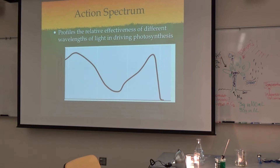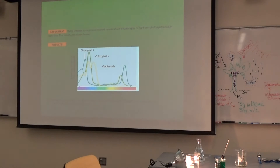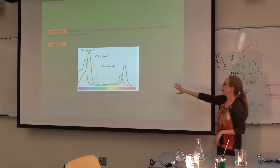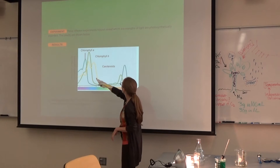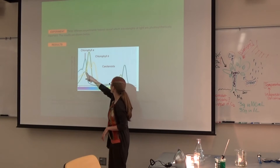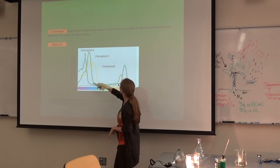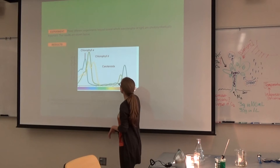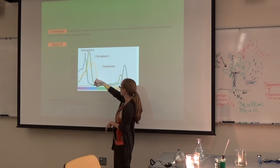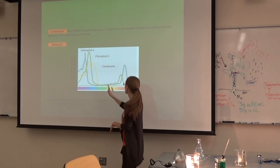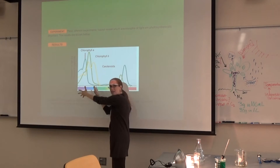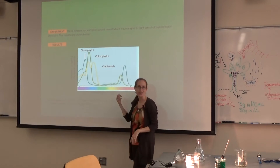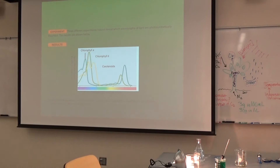Looking at the actual absorption spectrum — here's chlorophyll A, the darker greenish blue. You can see chlorophyll B is just slightly shifted from that. And then look at carotenoids — these are orange pigments. You would predict that if they appear orange and red, they are actually absorbing those colors and reflecting them back to you.